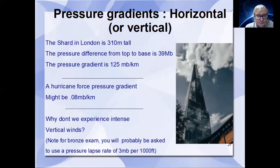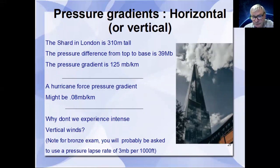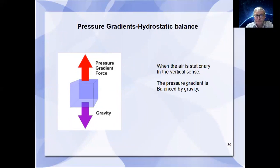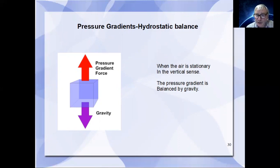Here's a conundrum: the Shard in London is 310 metres tall, and the pressure difference between its base and top is 39 millibars — a gradient of 125 millibars per kilometre. If a hurricane has a gradient of 0.08, why don't we get sucked into outer space? The answer is gravity. In the vertical, pressure gradients are balanced by what is called hydrostatic balance — gravity opposes the pressure gradient force and brings the values back to something sensible.